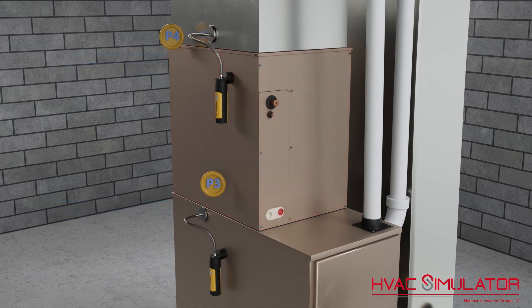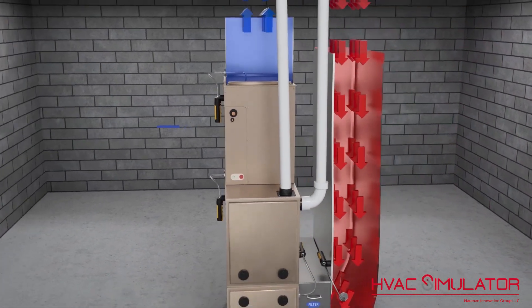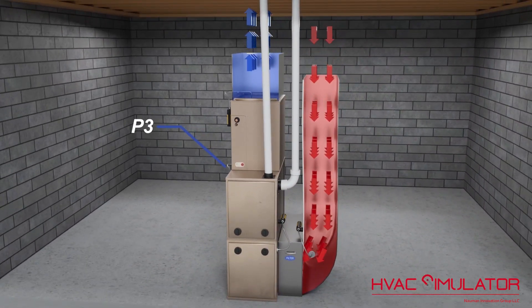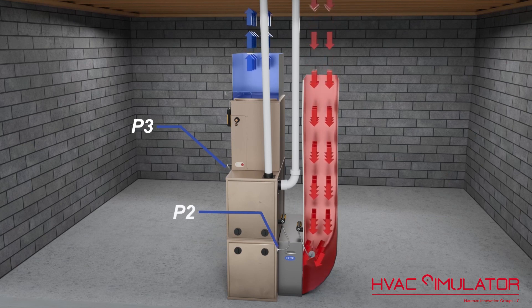Total external static pressure is the pressure measured external to the equipment. It's the difference between the total pressure on the negative side of the system and the total pressure on the supply side. Or, external static pressure is the difference between P3 and P2, where P3 is the greatest positive pressure and P2 is the greatest negative pressure.